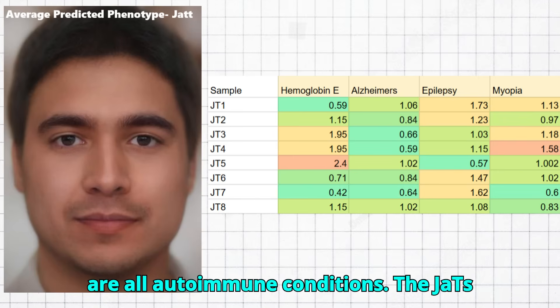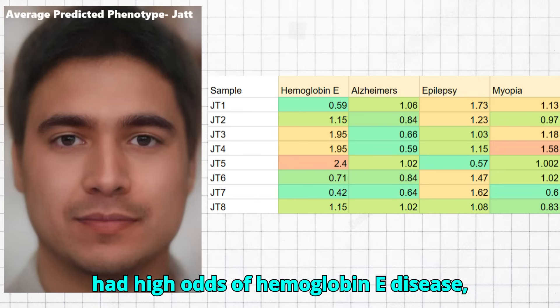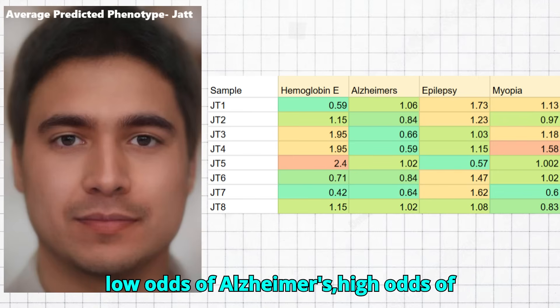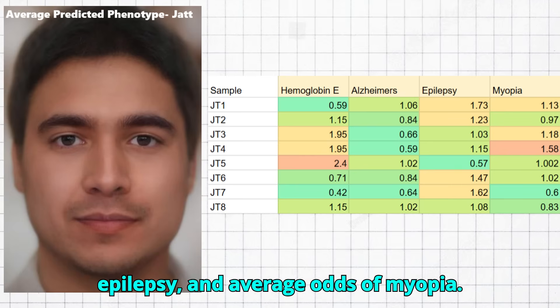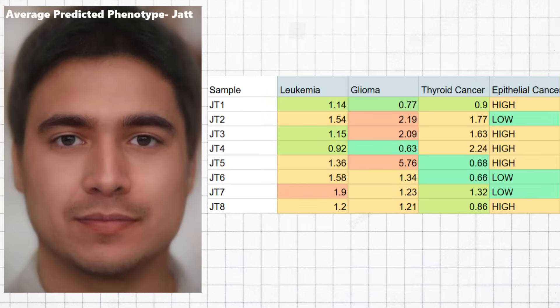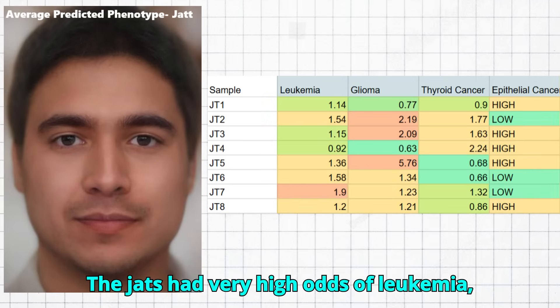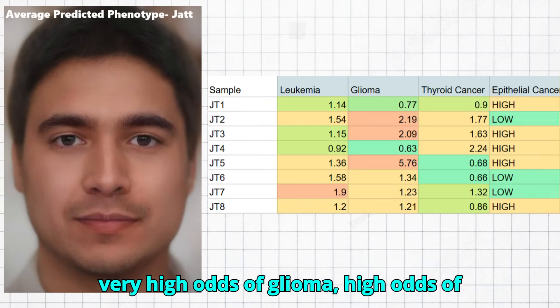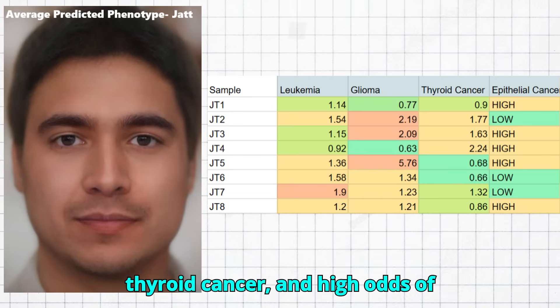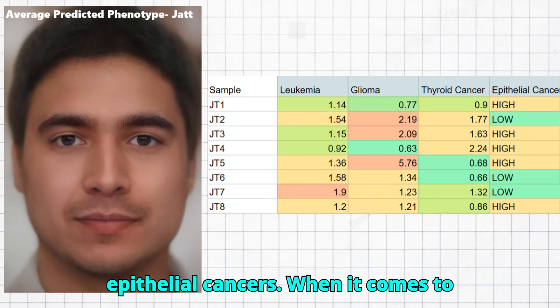The JATs had high odds of hemoglobin E disease, low odds of Alzheimer's, high odds of epilepsy, and average odds of myopia. The JATs had very high odds of leukemia, very high odds of glioma, high odds of thyroid cancer, and high odds of epithelial cancers.